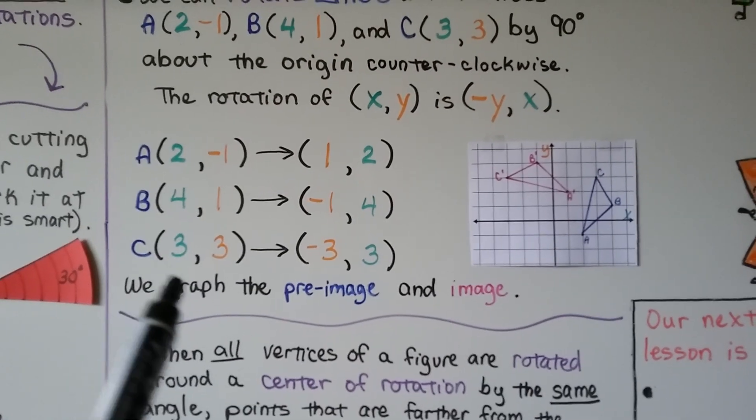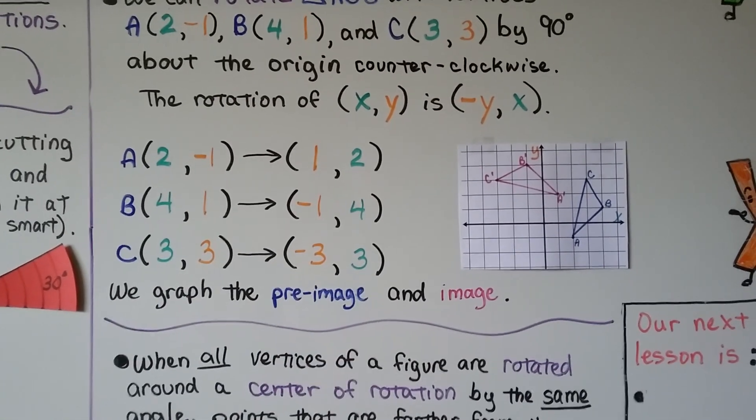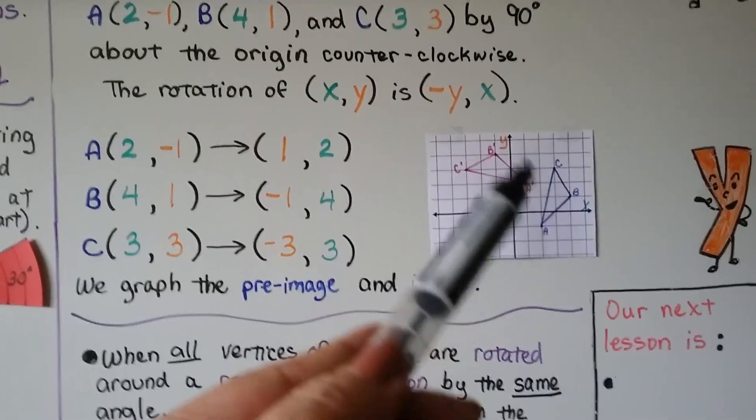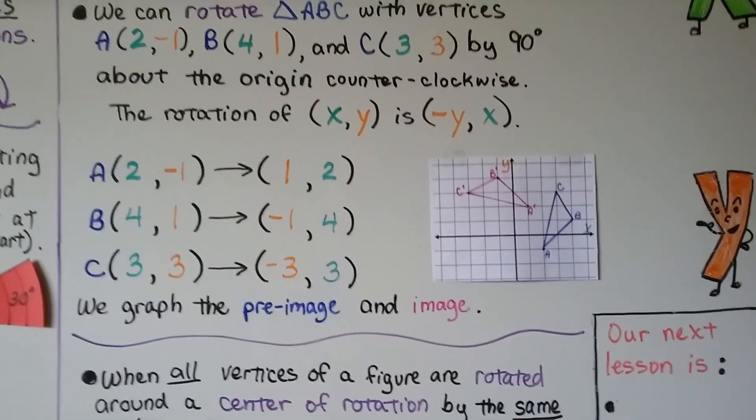We do the same thing for 3. We end up with a negative 3, 3. And we graph the pre-image and the image and we've got our pink image here.